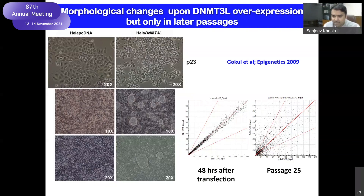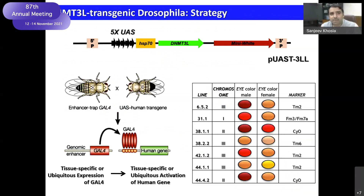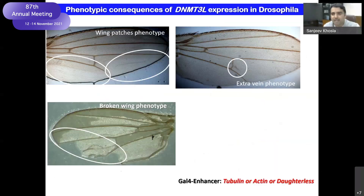Amit then went on to look at the role of DNMT3L in nuclear reprogramming in a more robust genetic model system — Drosophila. Drosophila doesn't have this protein, so he made transgenic flies using various genetic tools, controlling which cells and when the protein should be expressed. As Gokul had seen, when he expressed this protein in Drosophila, he did not see anything much in the first generation.